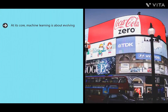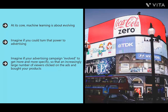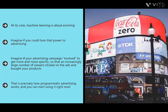At its core, machine learning is about evolving — getting more and more data to the point it can make more accurate assertions. Imagine if you could turn that power to advertising: showing precisely the right advertisements to precisely the right people at precisely the right times. Imagine if your advertising campaign evolved to get more and more specific, so an increasingly large number of viewers clicked and bought your products — and the less you'd spend on ineffectual ads. That is precisely how programmatic advertising works.